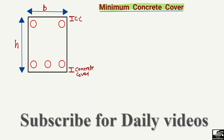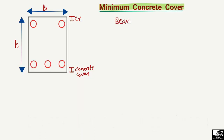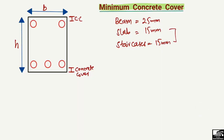The minimum concrete cover for a beam is 25 mm. For a slab, the minimum concrete cover is 15 mm, which is 10 mm less than the beam. For a staircase, the minimum concrete cover is also 15 mm, the same as a slab. The highest concrete cover is for the footing, where the minimum is 50 mm.